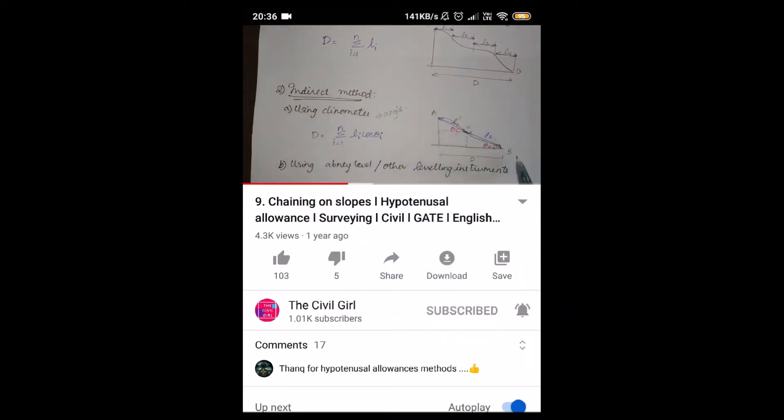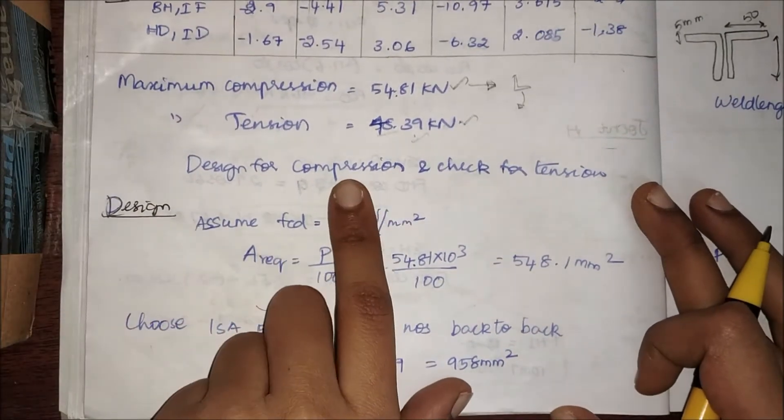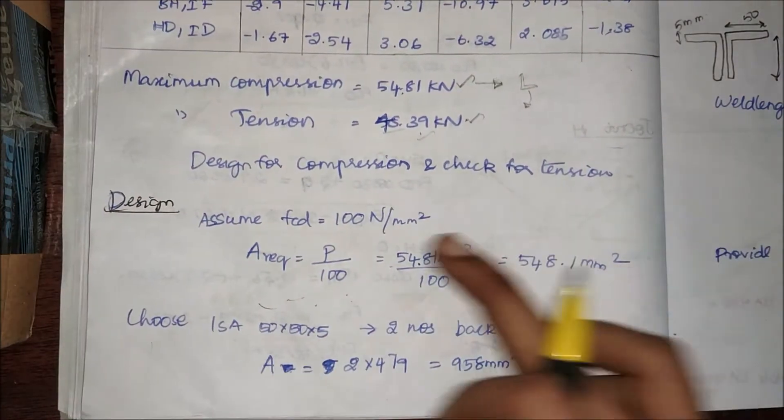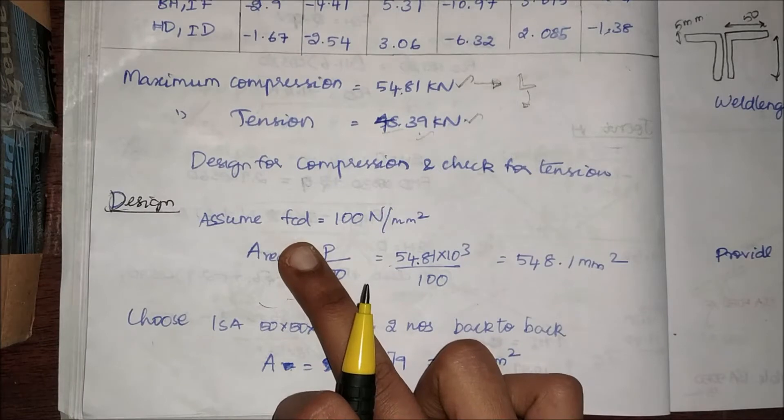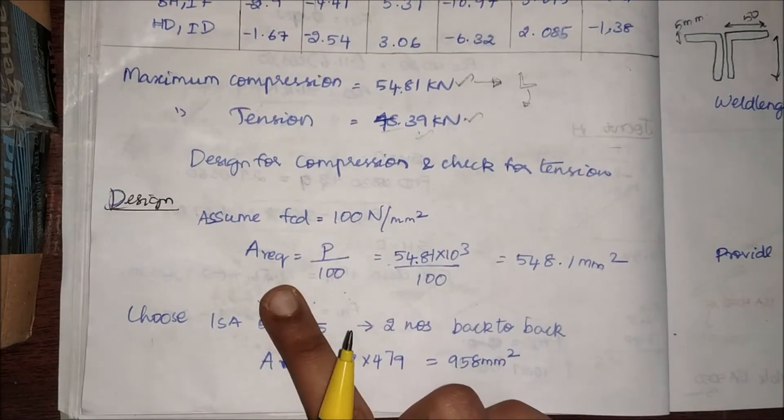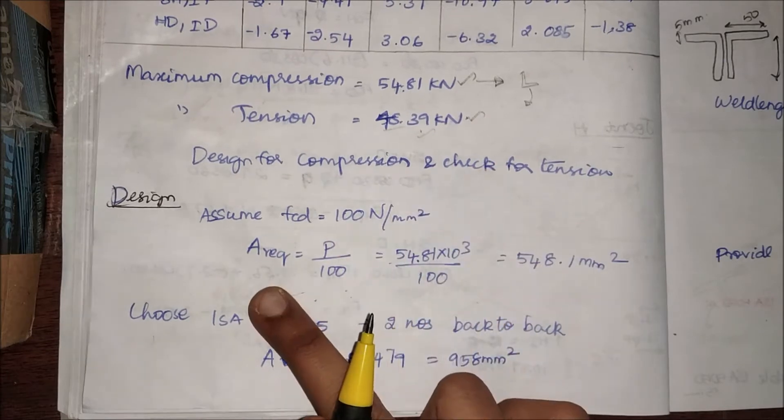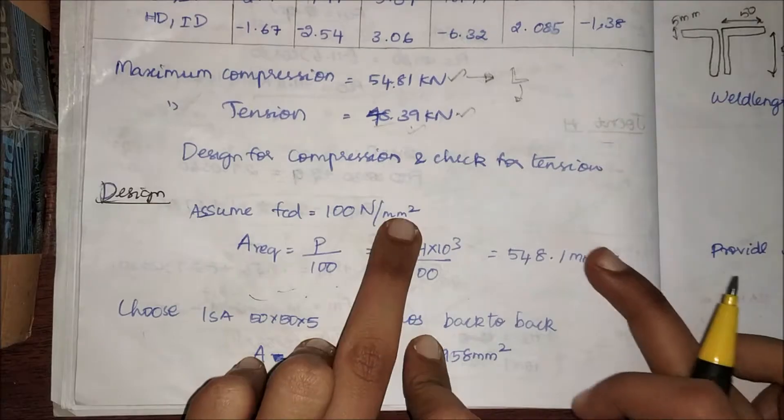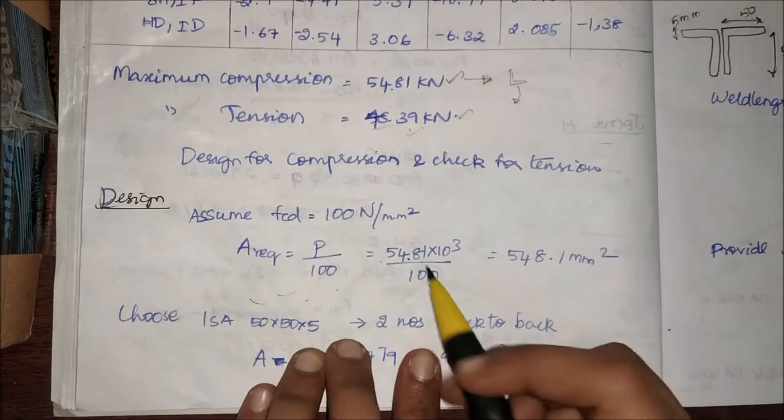Firstly, we are going to design for compression and check for tension. Since we are designing for compression, we have to assume the FCD value. I'm going to assume FCD as 100 N/m². From that I can find what is my area. My load is the maximum compression acting on the member, 54.81 kN divided by 100.